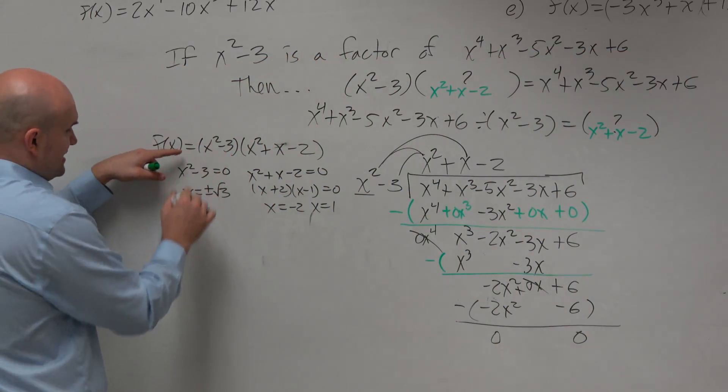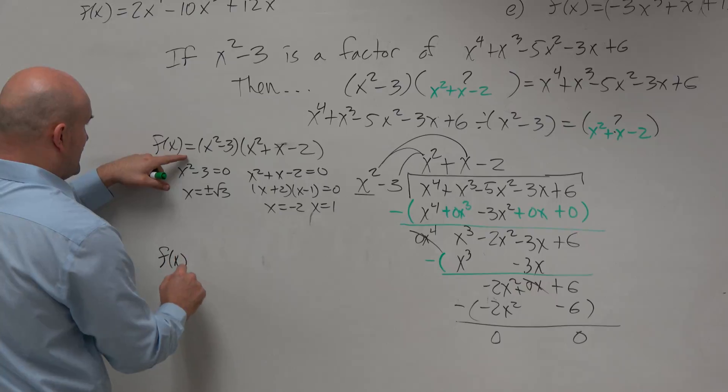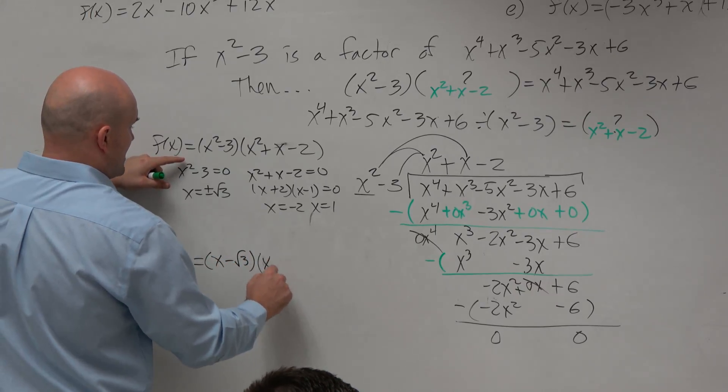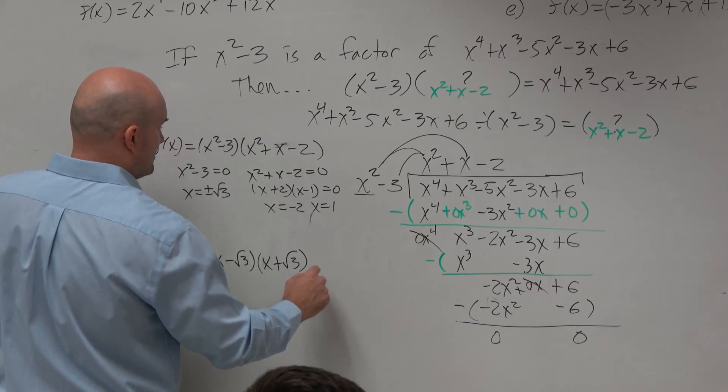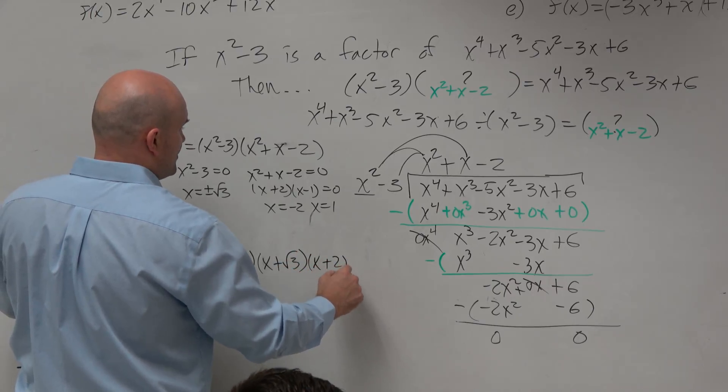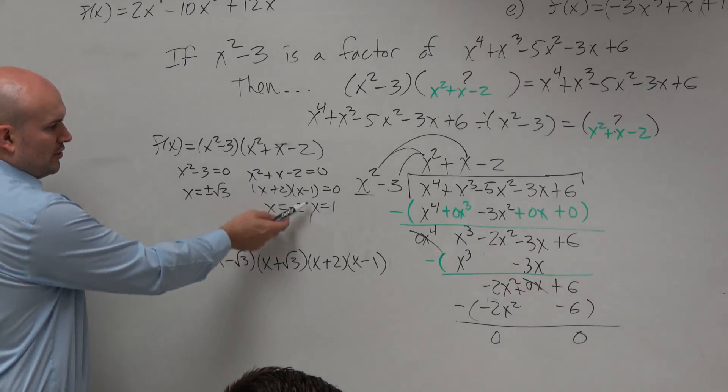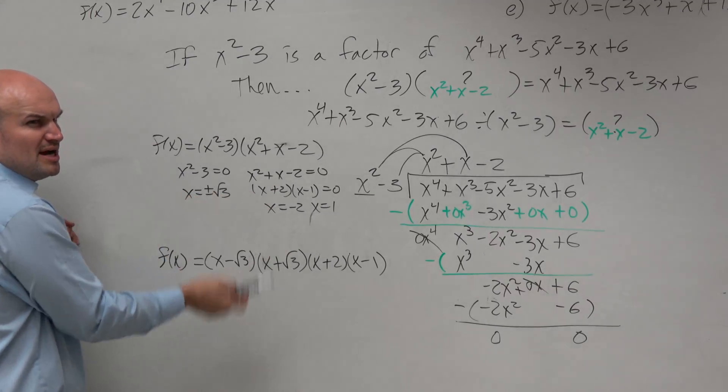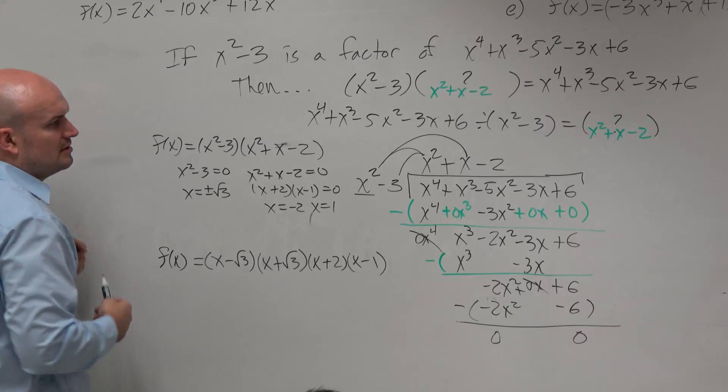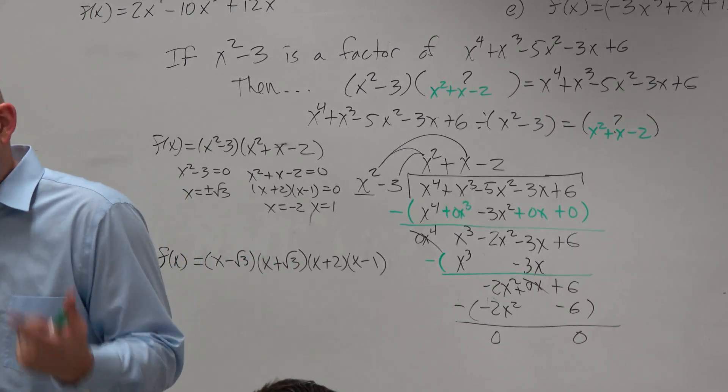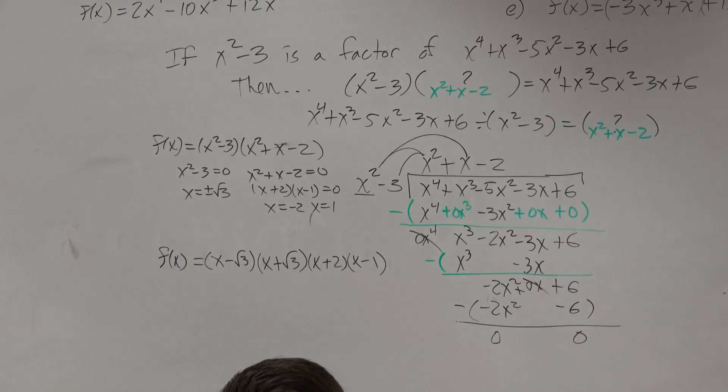But what if I wanted to actually write this as a linear factorization? What that means is I need to be able to factor this down further, which would be x minus square root of 3 times x plus the square root of 3 times x plus 2 times x minus 1. Is everybody OK with me going from my zeros to my factors? That was something we practiced last class. But now we found all the zeros just given one factor. That was kind of cool.